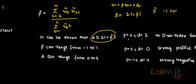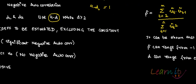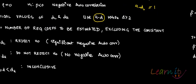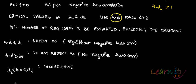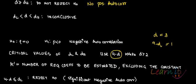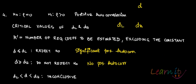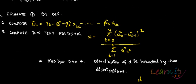The other test for serial correlation is the LM test, which is an advancement addressing the weaknesses of the Durbin-Watson test. That test can actually test for higher order autocorrelation.